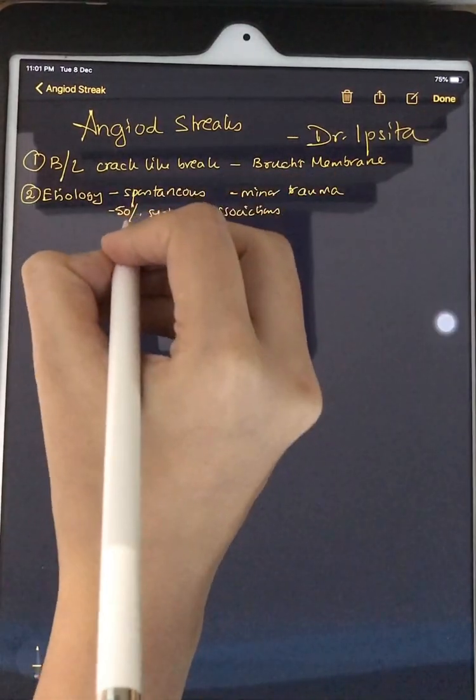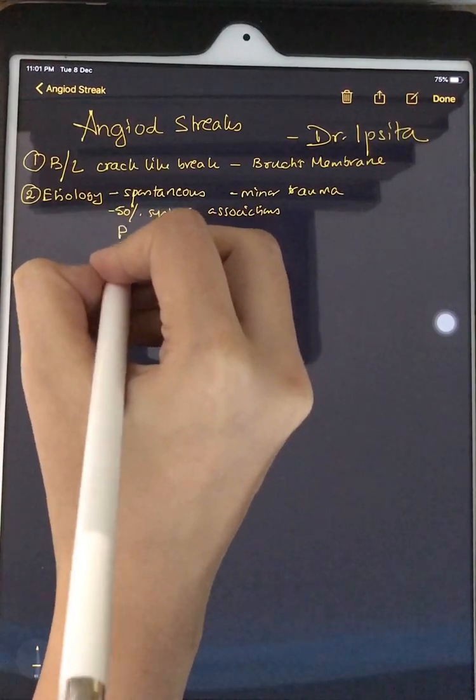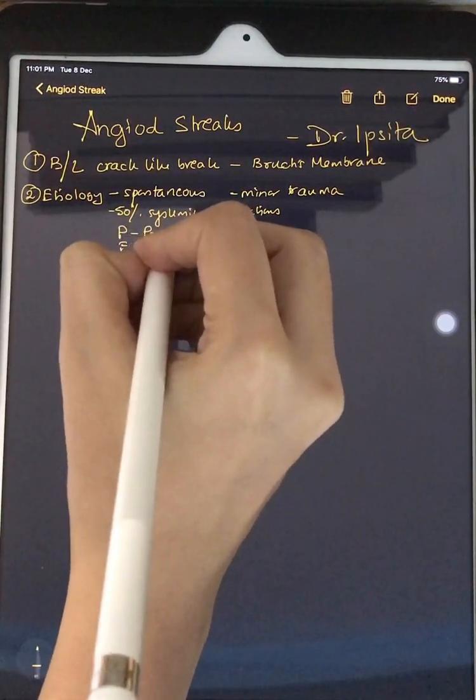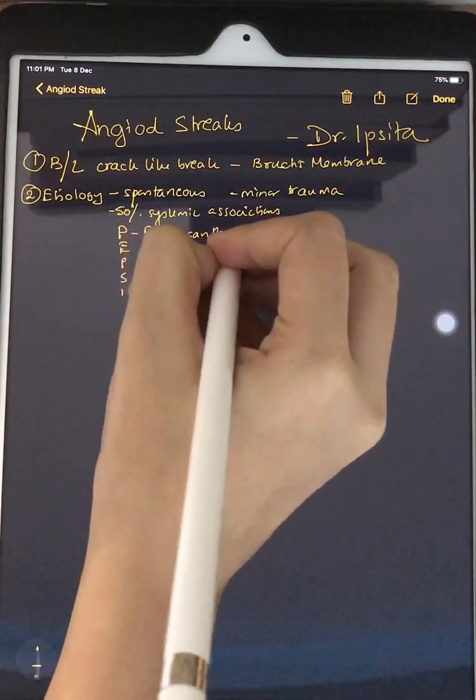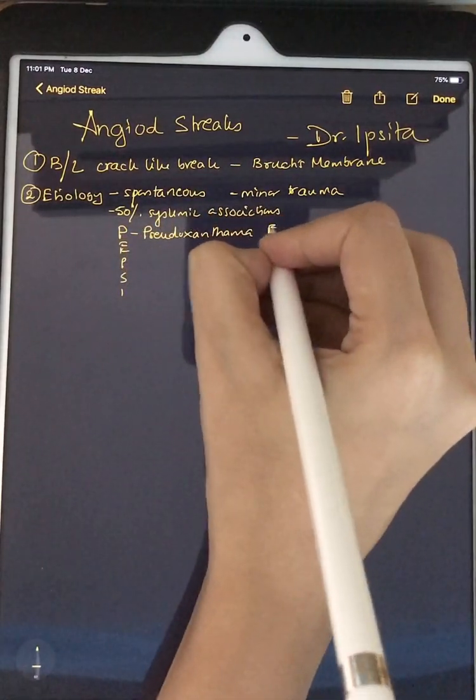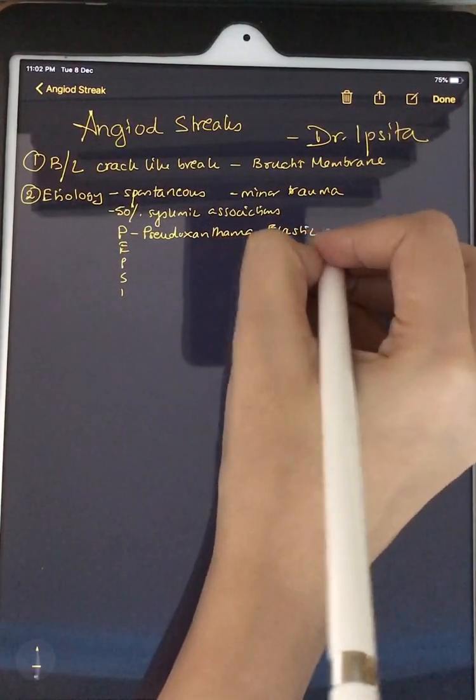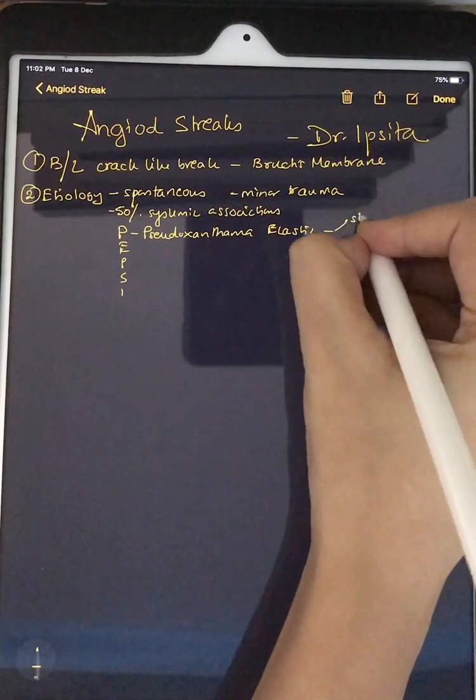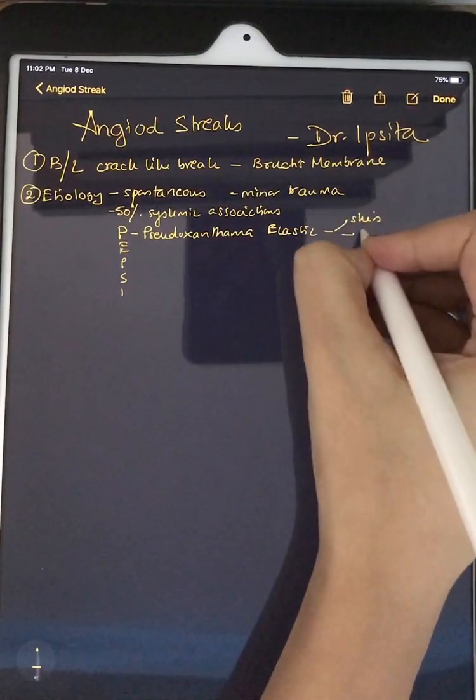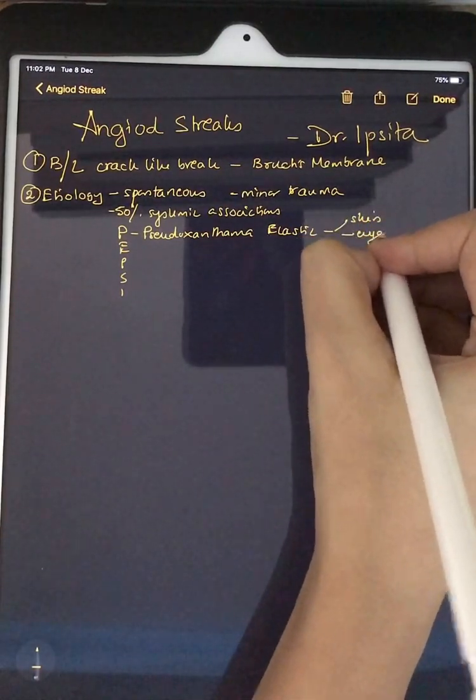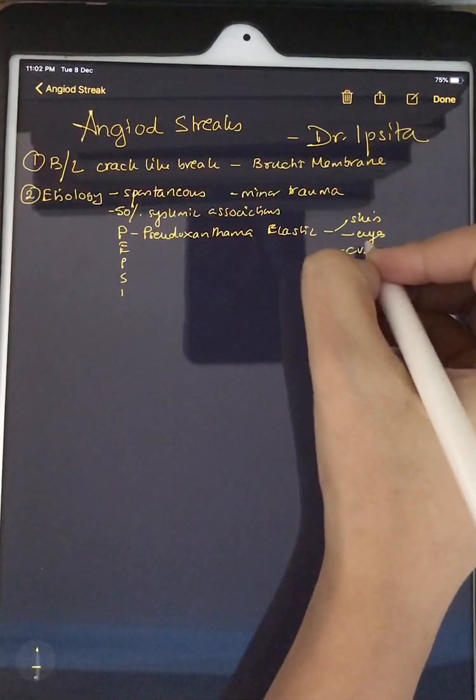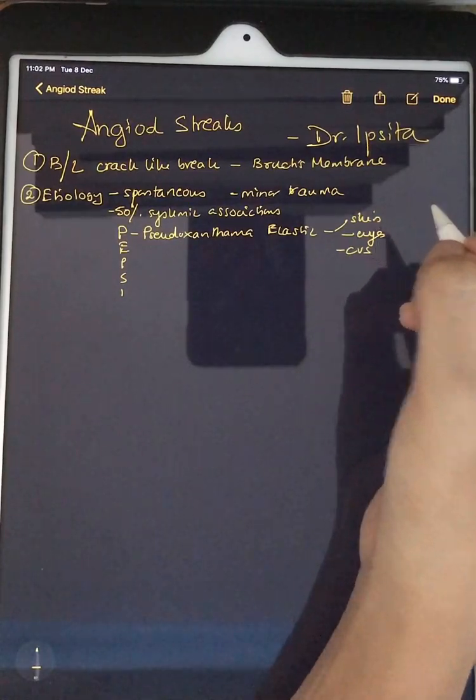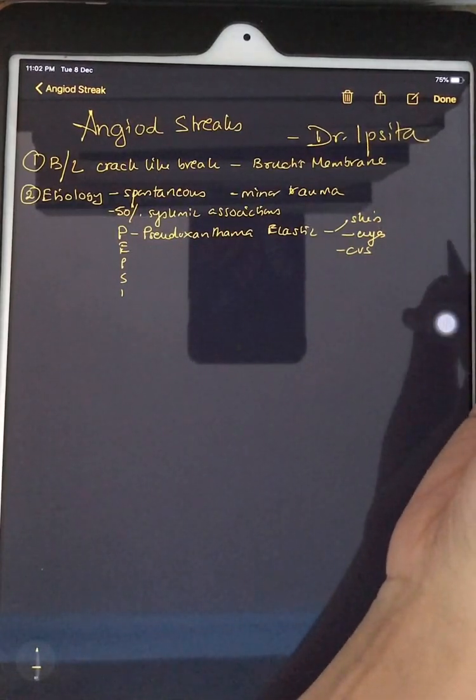So there is a mnemonic for the systemic associations. It's PEPSI. P stands for Pseudoxanthoma elasticum. What is this? This is a disease of the connective tissue. There is degeneration of the elastic fibers which affect the skin, eyes, and the cardiovascular system. We have to remember that in skin it has a plucked chicken appearance which affects the neck, axilla, and antecubital fossa.